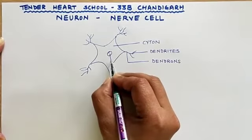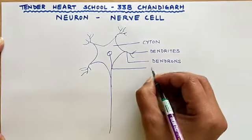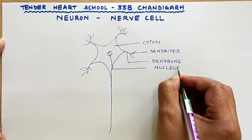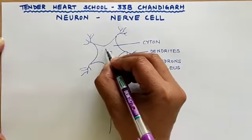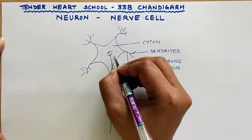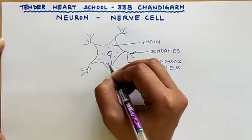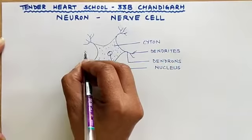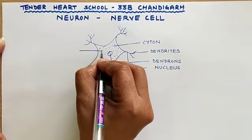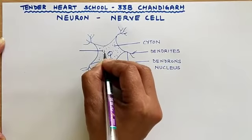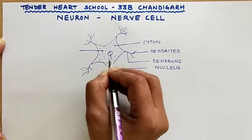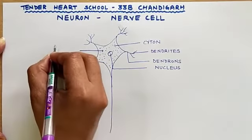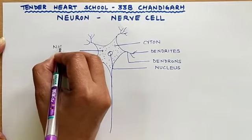These are the dendrons. In the center we have the nucleus. Also in the cytoplasm of the nerve cell, certain granules are present. These are called the Nissl granules — small granules which are present in the cytoplasm of a nerve cell.